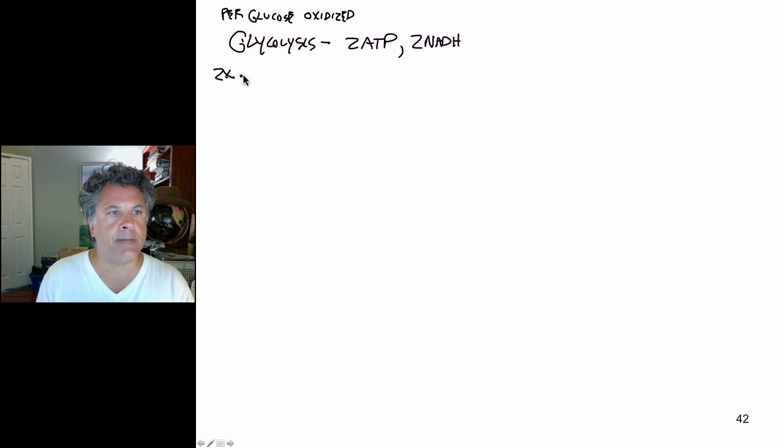This is per glucose oxidized. From two times the pyruvate oxidation, because we will have two molecules of pyruvate, we get two NADHs.